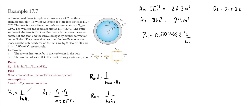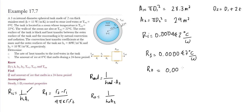For R1, we have all the geometric quantities and substituting them, the conduction resistance gives us 0.00047°C/W. Moving to the outer convection resistance R0, substituting all available values gives us 0.00345°C/W. Since we do not yet have the radiation coefficient, we will come back to that.